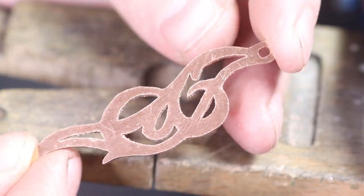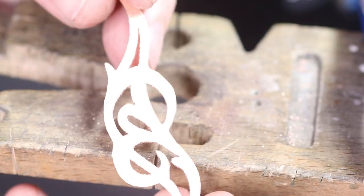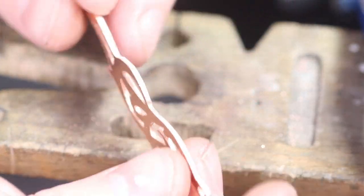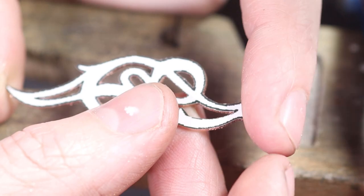All right, so here it is all cut out using the Lion Punch Forge one. Put this to the side and do the other one.